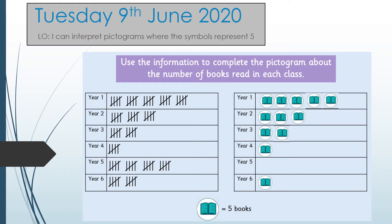Year 4: five in the tally and five in the pictogram — perfect. Year 5: there's nothing in the pictogram but in the tally there are four lots of five which makes 20, so 5, 10, 15, 20 — there we go. Finally Year 6: there are ten in the tally chart so I need to have two books, which makes ten in the pictogram. And there we go — the pictogram now matches the tally.